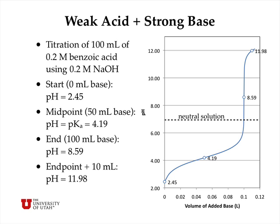That equality of pH and pKa at the midpoint is a property of buffer solutions. At the endpoint, or equivalence point in this case, where we've added 100 milliliters of base, the pH is 8.59, and we'll see how to calculate that value from the hydrolysis of benzoate anion. After the endpoint, if we continue adding base — say another 10 milliliters — the pH increases very rapidly to 11.98.